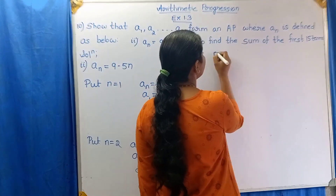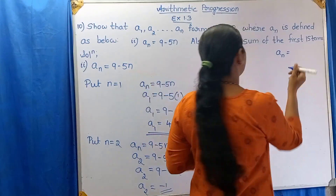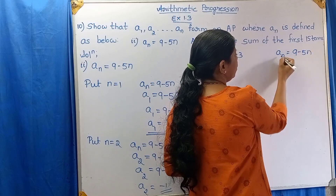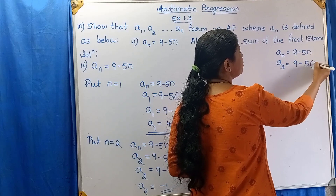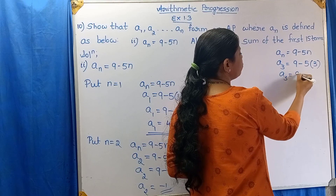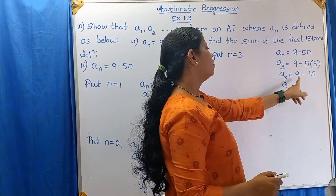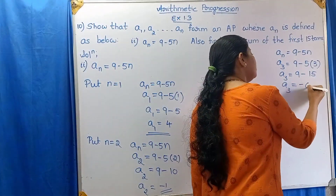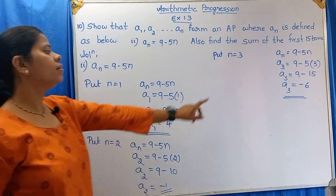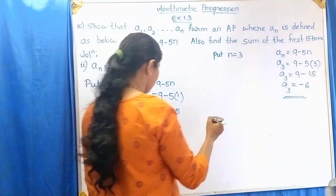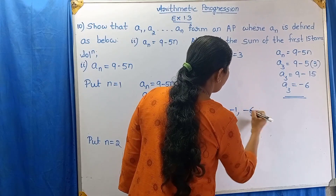Now put n = 3: A3 = 9 − 5(3) = 9 − 15 = −6. So we have the values: A1 = 4, A2 = −1, and A3 = −6.